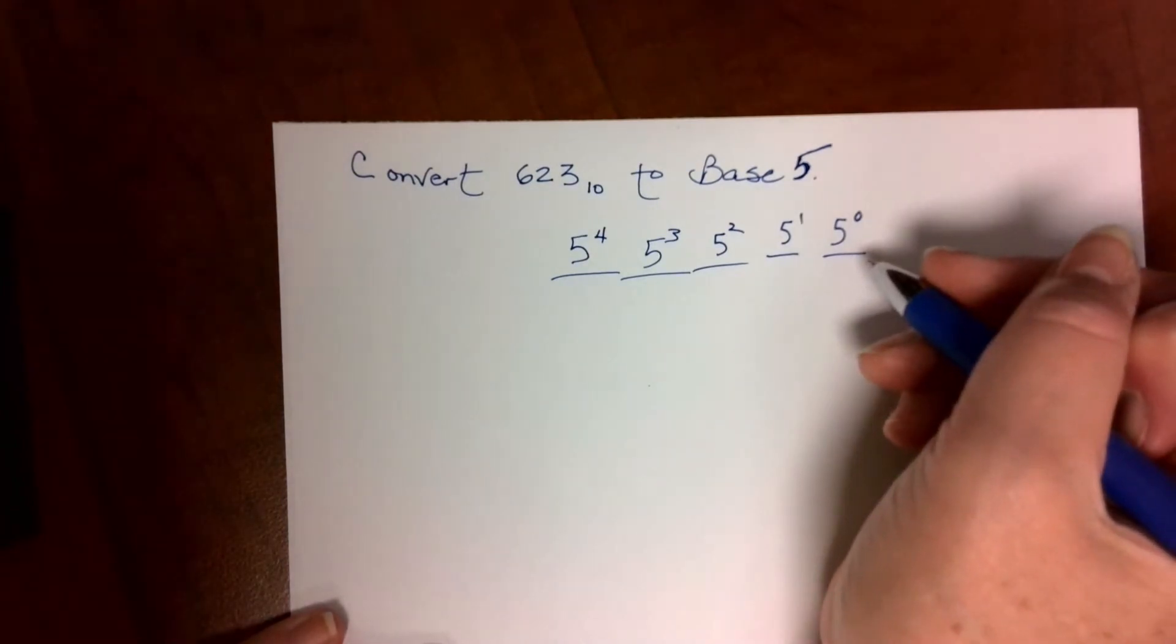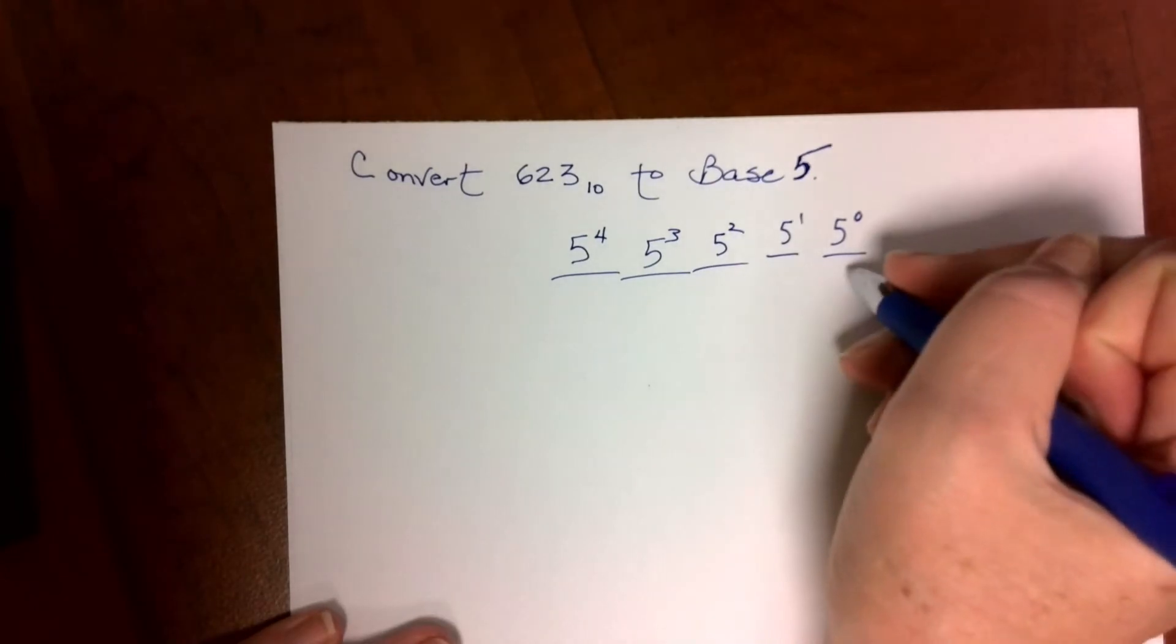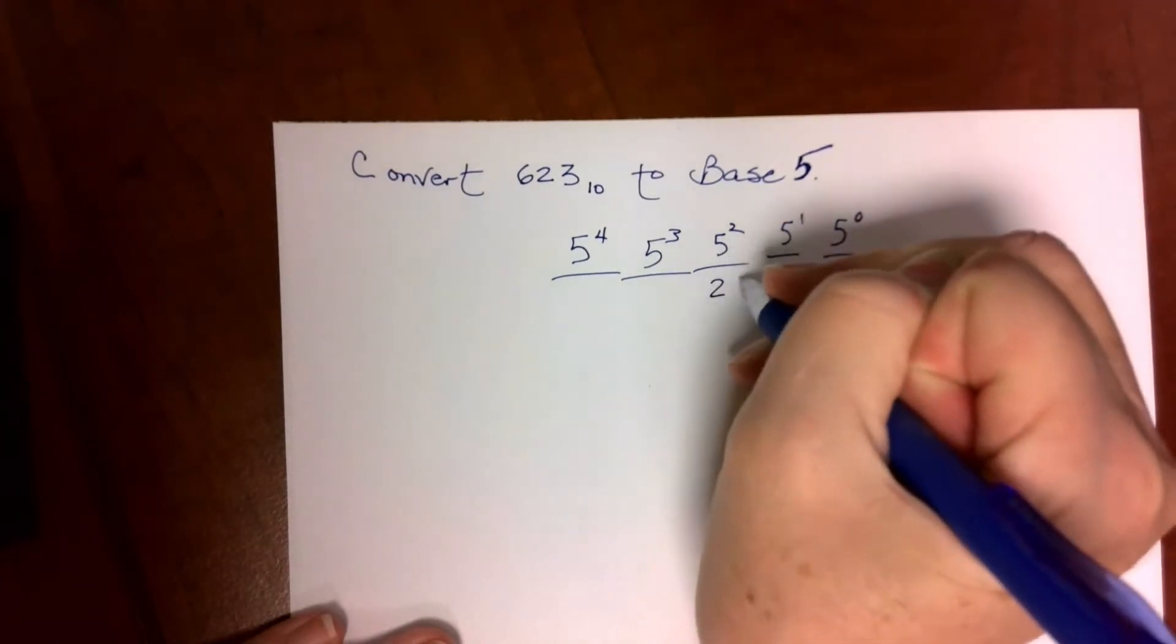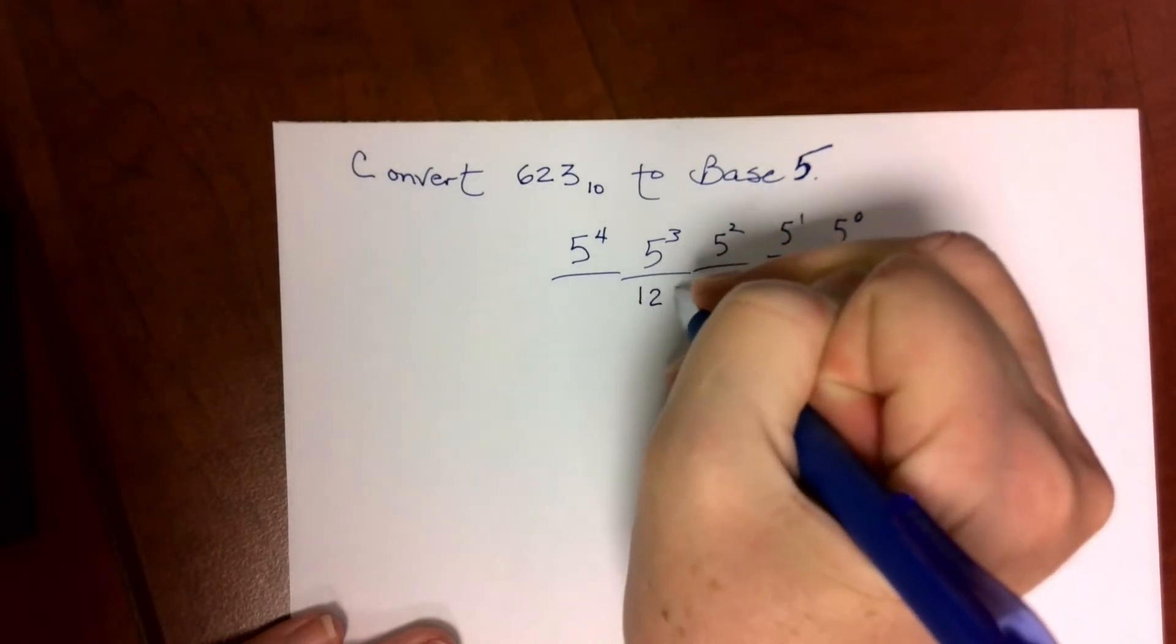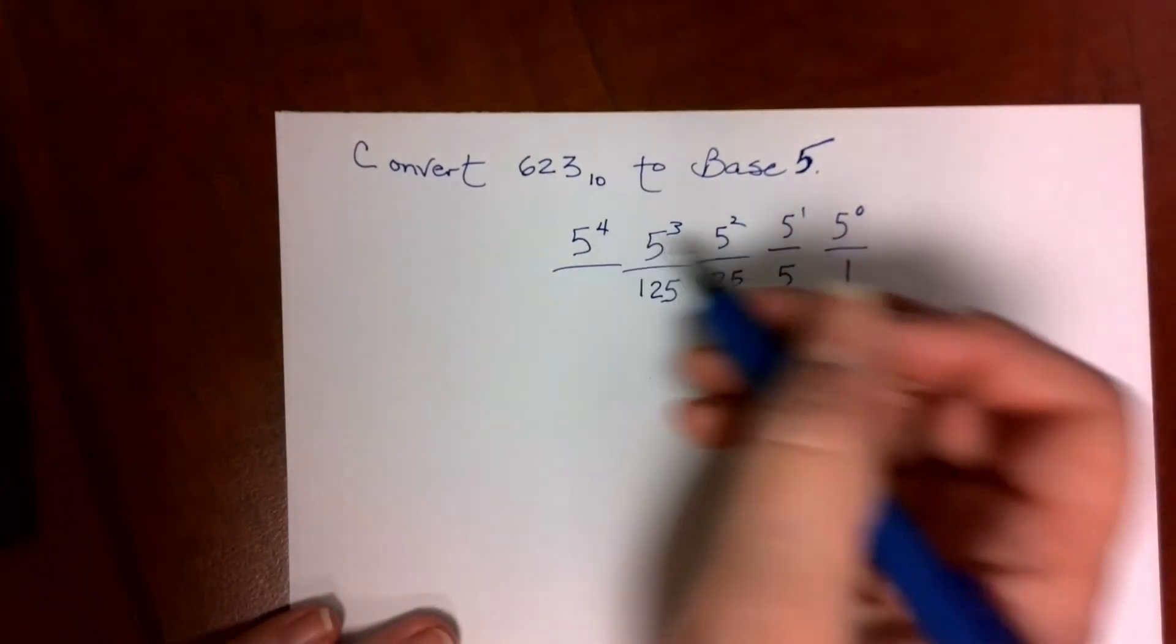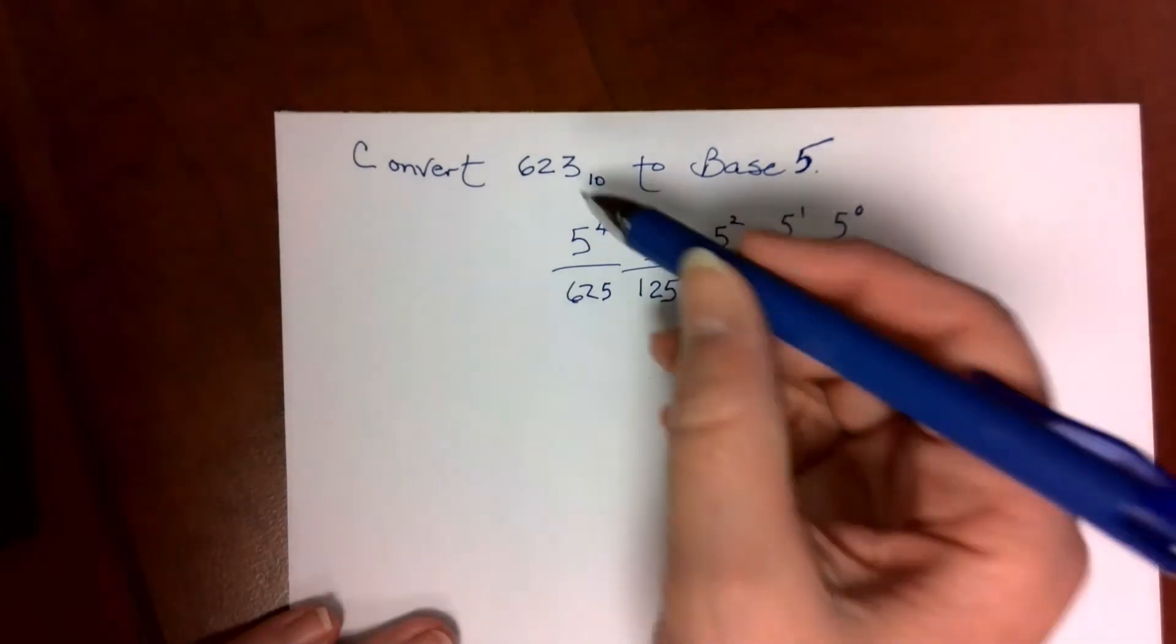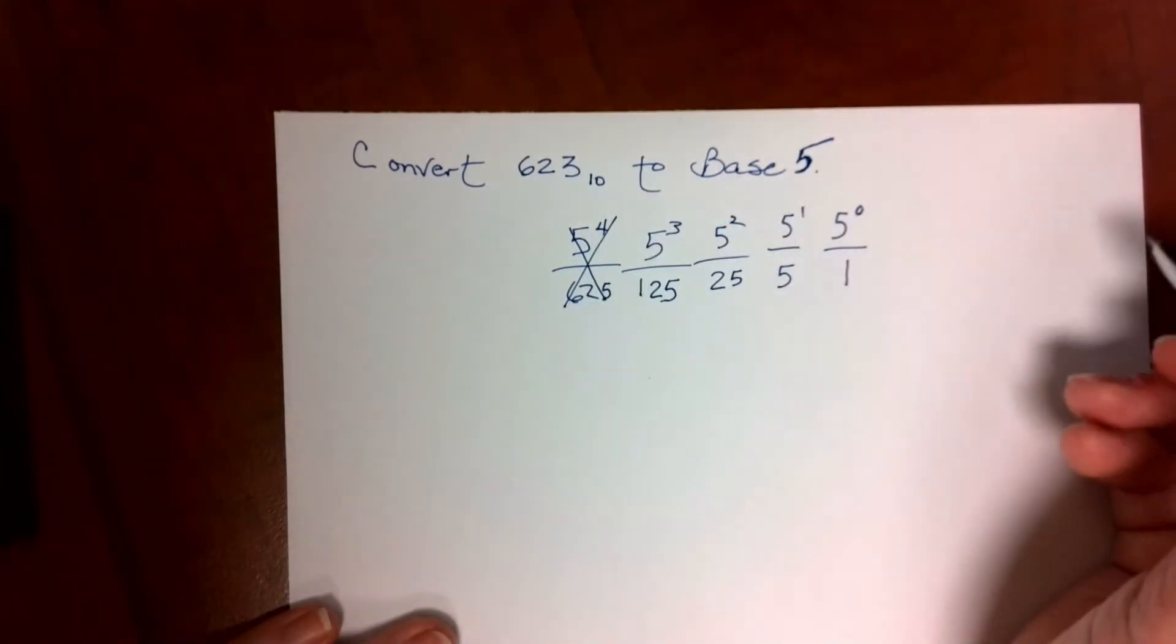We need to know the value of each of these columns. 5 to the zero is the ones column. This column will be worth 5. 5 squared is 25. 5 to the third is 125. We might even need 5 to the fourth, which is 625. No, we don't. That's bigger than 623, so we didn't need that column.